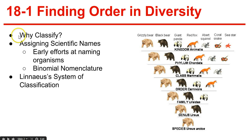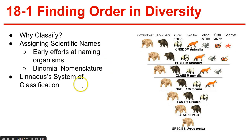Assigning scientific names. Early attempts at naming organisms: the first names described the physical characteristics of organisms in great detail. For example, an oak tree would be described as 'oak with deeply divided leaves that have no hairs on their undersides and no teeth around their edges.' However, this was not the most efficient way of naming organisms, and we soon switched to binomial nomenclature.